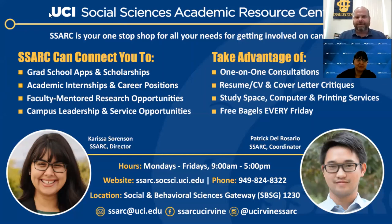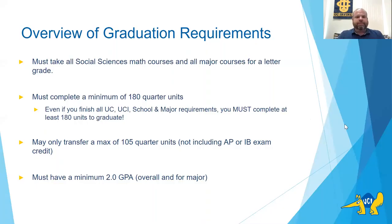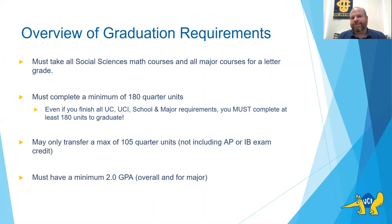Thank you, Carissa. I can't say enough about how great the Social Sciences Academic Resource Center is. When you come on campus in the fall, it's going to be a great office to visit. So now let's talk about how to graduate. What do you need to do to graduate from UCI? Under the School of Social Sciences, we have a set of math courses and major courses that every student has to take, and all of these courses must be taken for a letter grade.